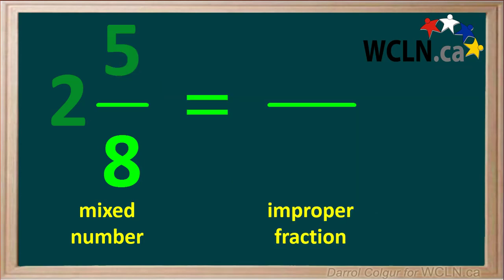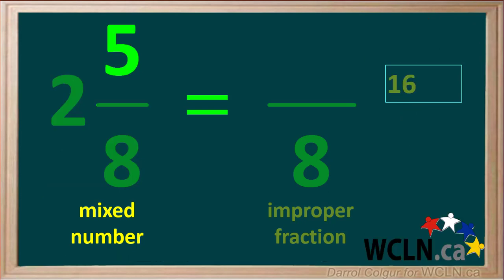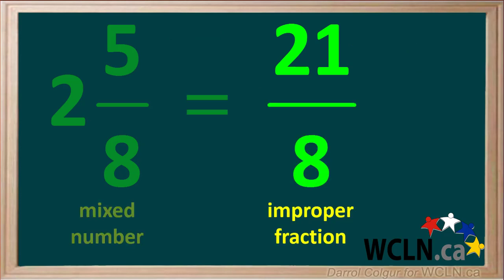The denominator of the improper fraction is the same as in the fraction of the mixed number, 8 in this case. Remember, to find the numerator, we go to the mixed number and multiply the whole number by the denominator. In this case, it's 2 times 8, which is 16. To the 16, we add the numerator of the mixed number, 5 in this case. So the numerator of our improper fraction is 16 plus 5, or 21. And our improper fraction is 21 over 8.